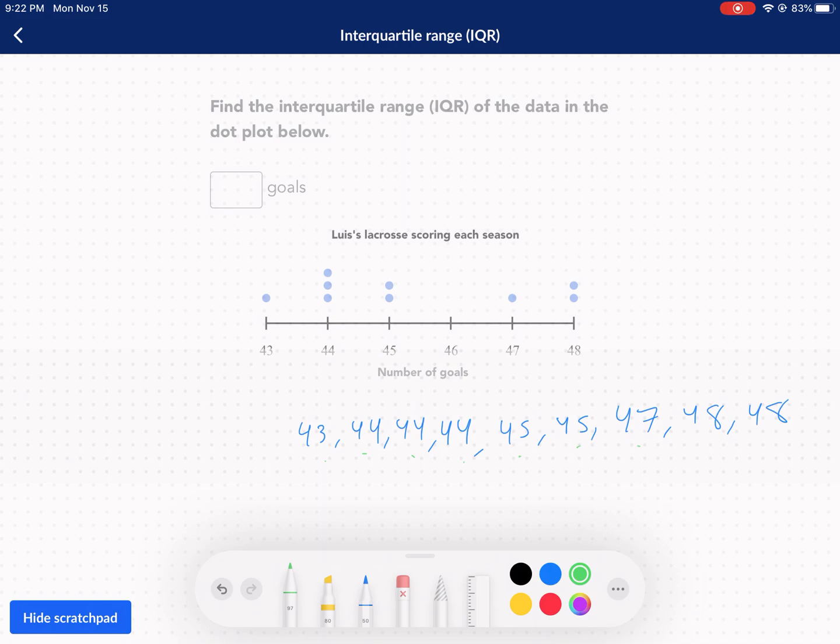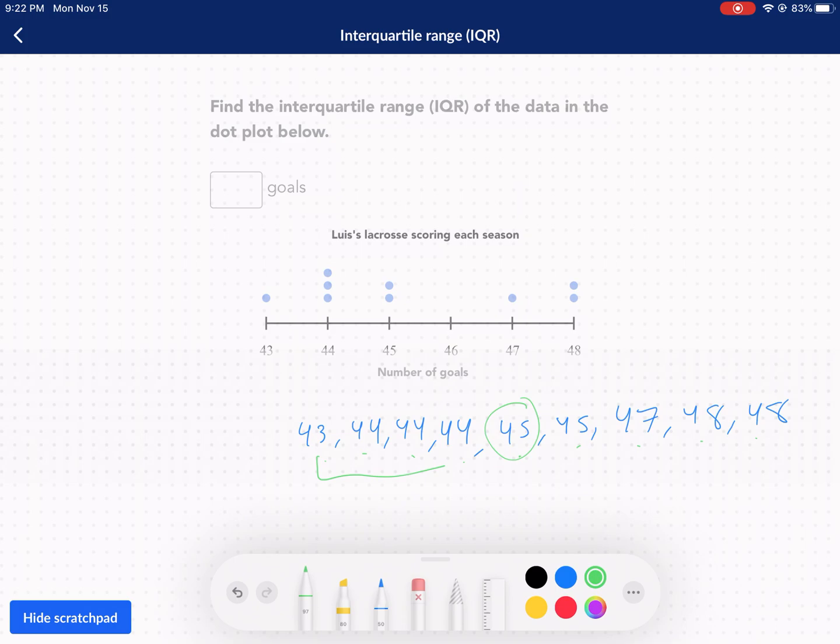So we have one, two, three, four, five, six, seven, eight, nine. So I'm going to count to five and that's going to be my median. Here's my first half of the data. Here's my second half.